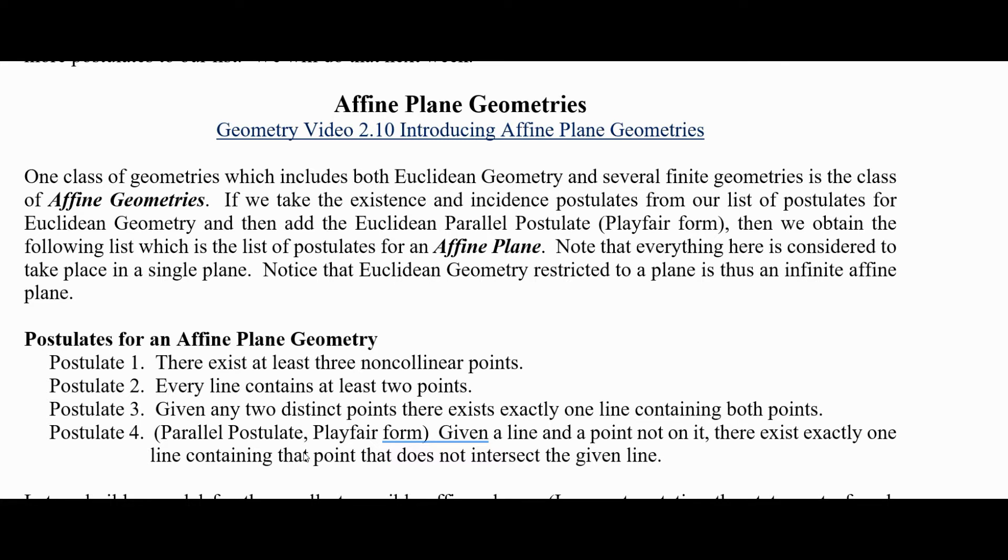Here they are, just four of them. Postulates for an affine plane: Postulate 1, there exists at least three non-collinear points. Postulate 2, every line contains at least two points. Postulate 3, given any two distinct points, there exists exactly one line containing both points.